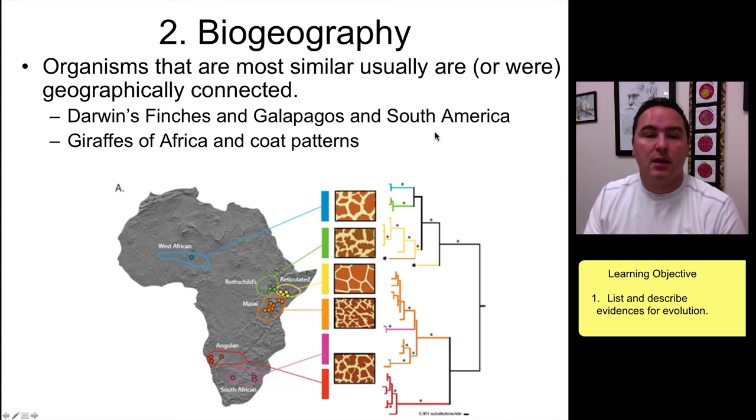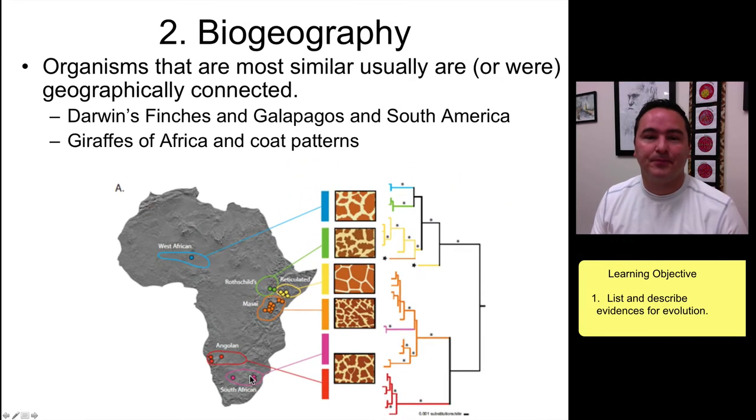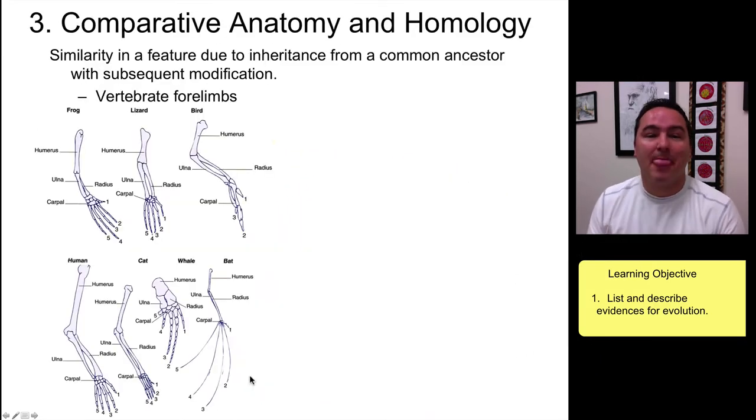We can also look at giraffes in Africa and you can see that the different giraffes that have the most similar coat pattern are also the giraffes that are most closely related based on their genetics, and they're the ones that live geographically next to each other as well.